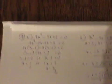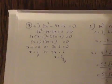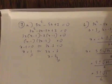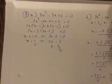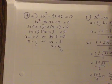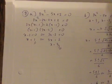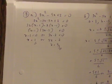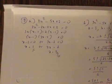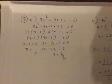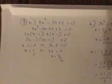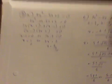Question 7: solve the quadratic equation three ways. First, factorizing: 3x² - 5x + 2 = 0. The factors give 3x² - 3x - 2x + 2 = 0, so 3x(x - 1) - 2(x - 1) = 0, giving (x - 1)(3x - 2) = 0, so x = 1 or x = 2/3. Direct factorization is also acceptable as long as it's done correctly.